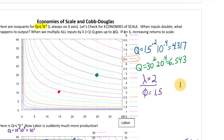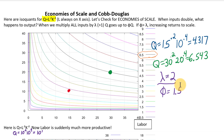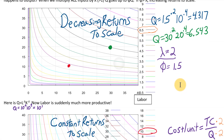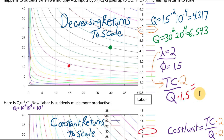What about the decreasing returns to scale example? Average total cost, or cost per unit, equals total cost divided by quantity. In the decreasing returns case, we multiplied our costs by 2 — that's our lambda — but our output only went up by 1.5. The numerator of this fraction went up by more than the denominator, so average total cost — cost per unit — gets higher as we try to expand output. That's why we care about decreasing returns to scale: as we expand output, cost per unit rises higher and higher.